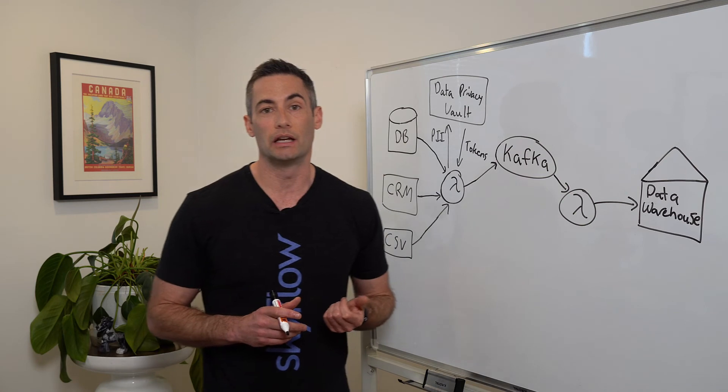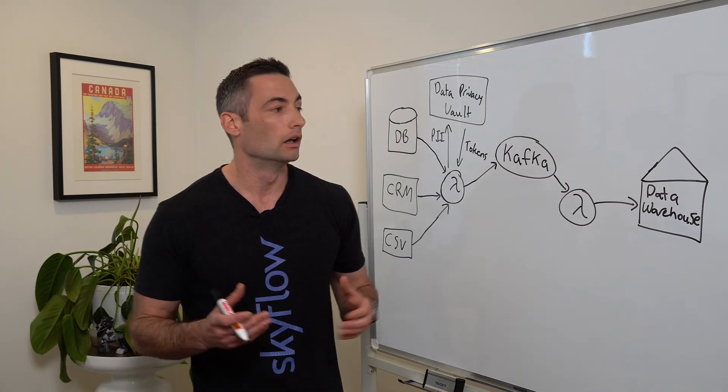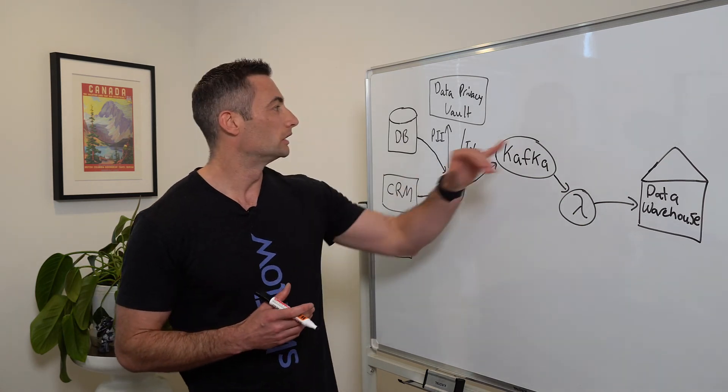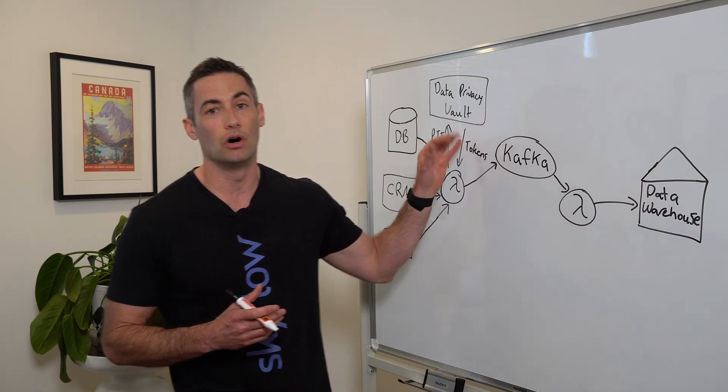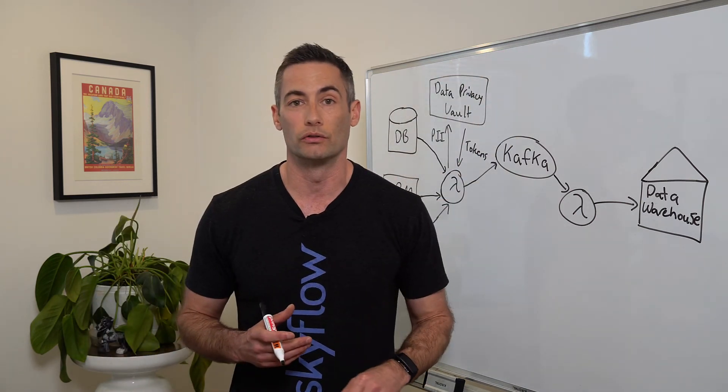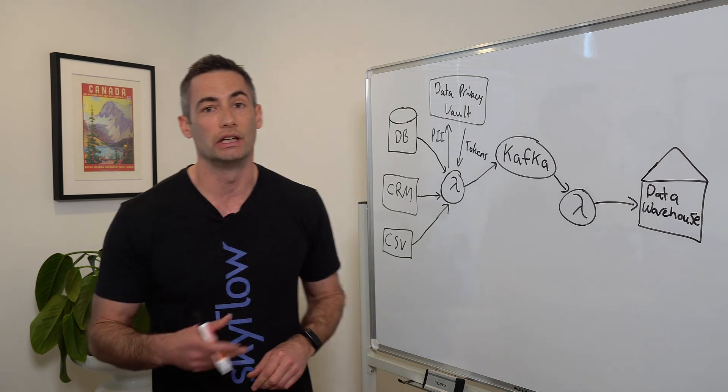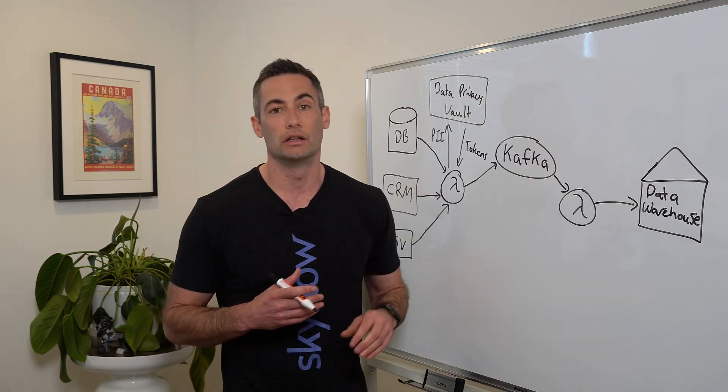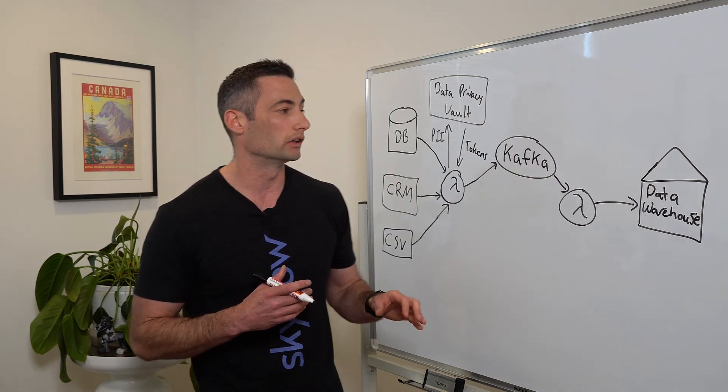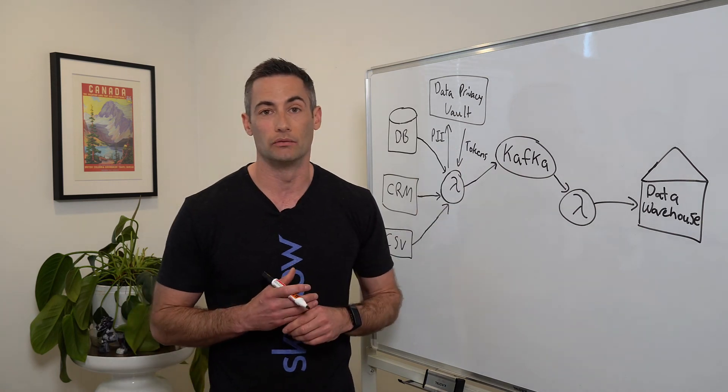Or even better, the marketing automation can send the tokenized data to the privacy vault, the vault communicates with the email service, detokenizes the data, and then none of the sensitive data, or the email in this case, ever touches your backend infrastructure.